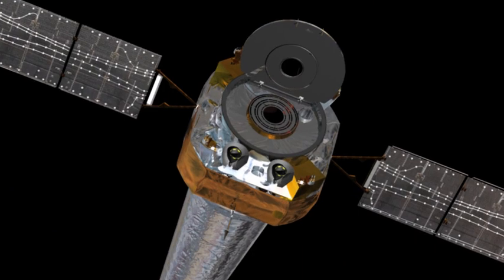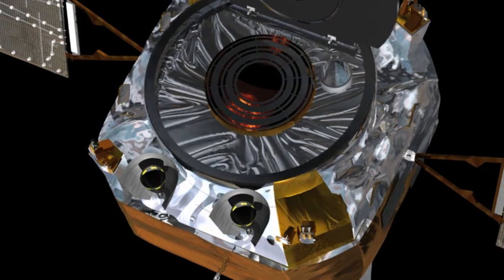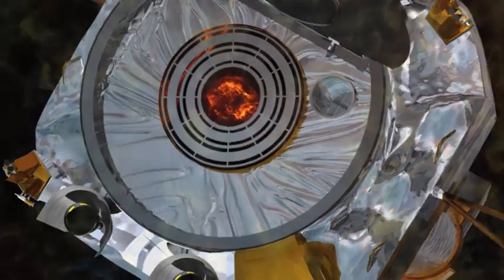Chandra is a telescope that is specially designed to look at X-rays that come from very hot places and objects in the universe, including exploded stars.